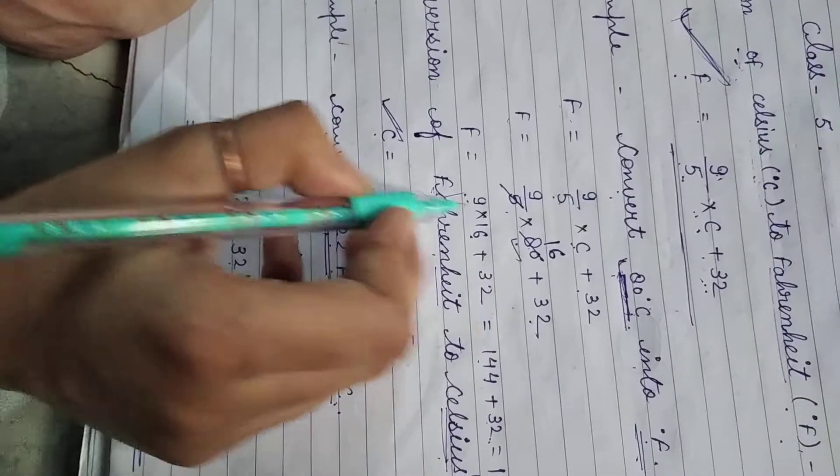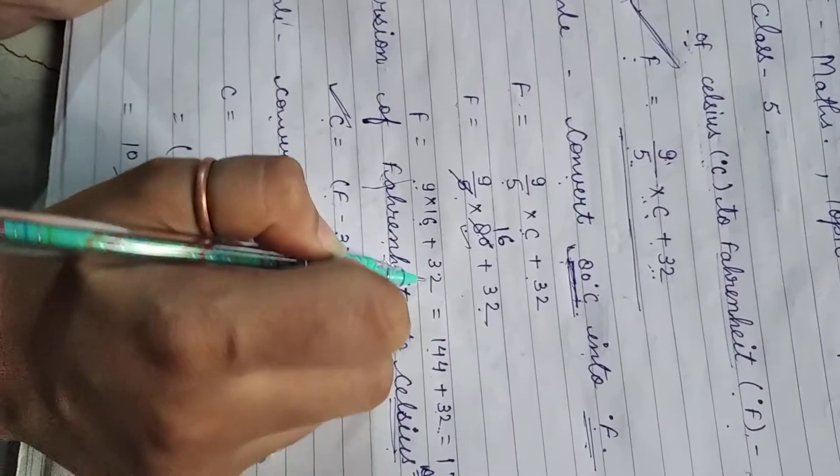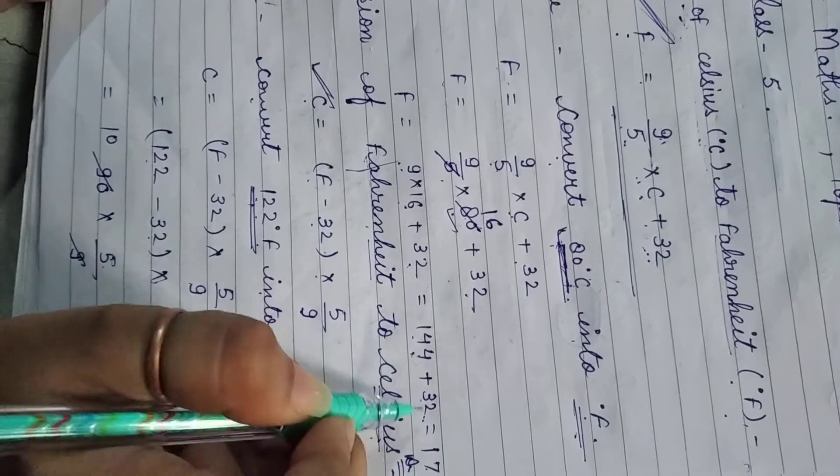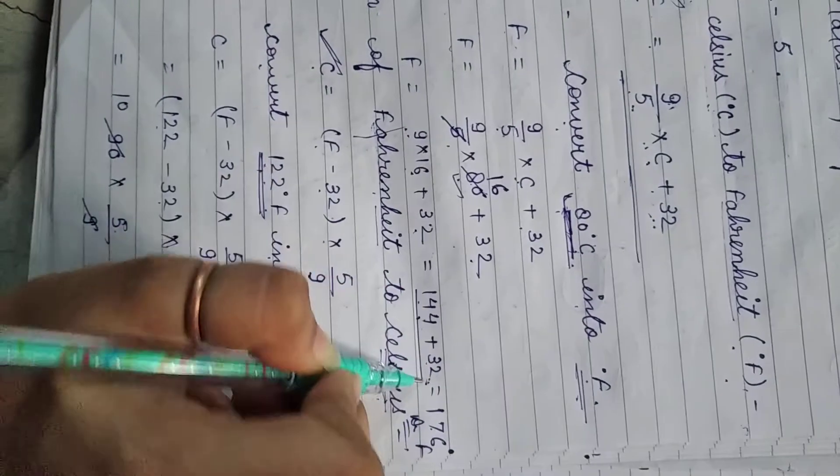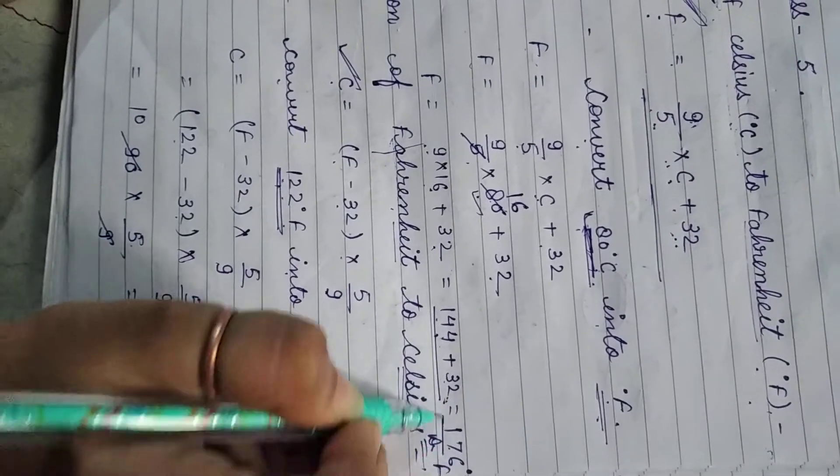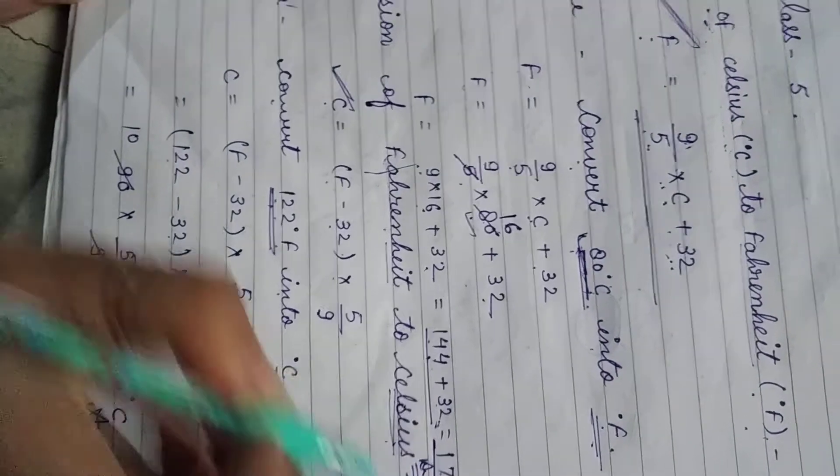9 into 16 plus 32 equals 144 plus 32. Adding these, our answer is 176 degrees Fahrenheit.